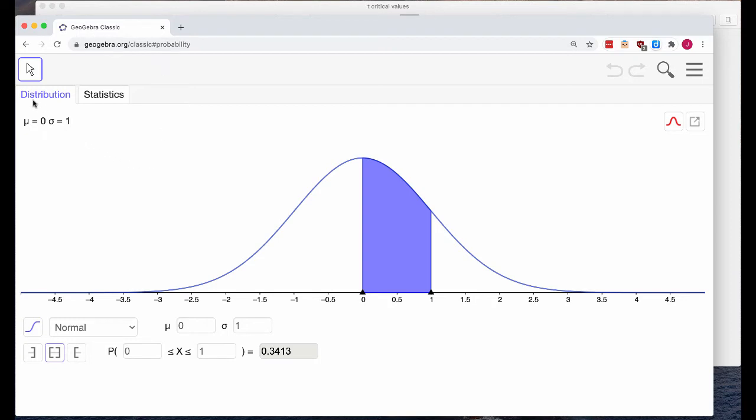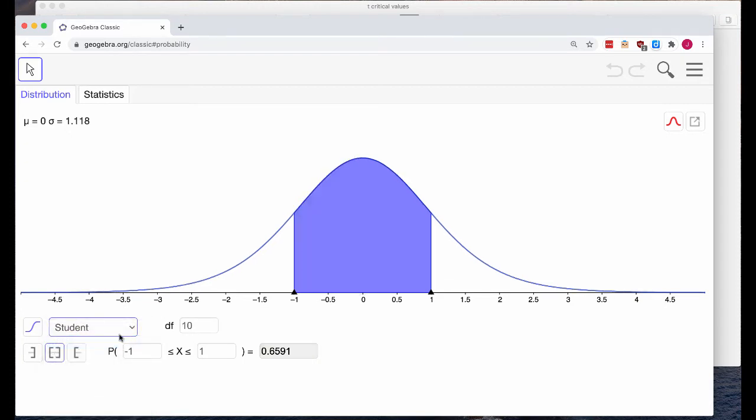There's two tabs on the left, distribution and statistics. We're going to use the distribution tab and then below the distribution in the middle of the page, there's going to be a drop down box that starts by default with normal, but we're going to click the down arrow and go to student. So that refers to the student's T distribution because we want a T critical value.